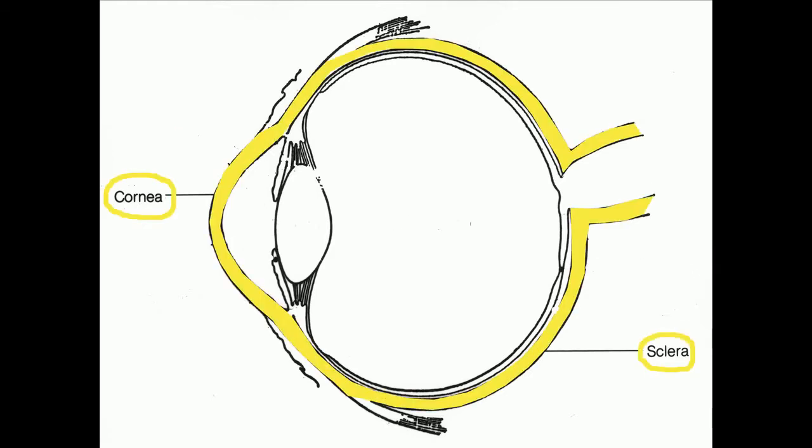The sclera is the hard outer layer of the eye. It is white, opaque, and made of fiber. In the front part of the eye, within the sclera, we find the cornea, which is transparent.